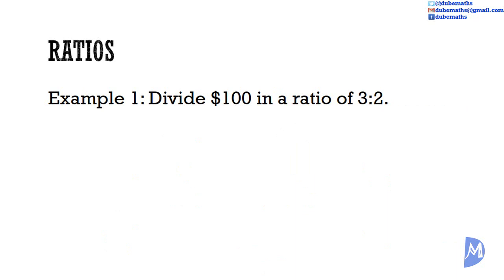Ratios are a comparison between similar quantities. So we divide $100 into 3 plus 2 which is equal to 5 equal parts. And we separate it into 3 parts and 2 parts.